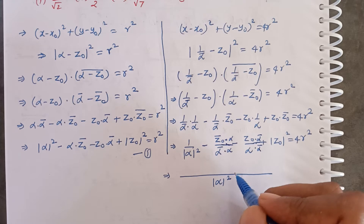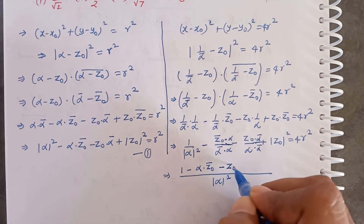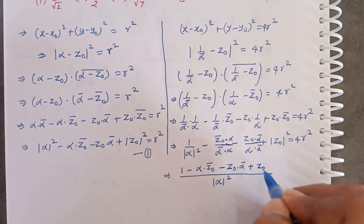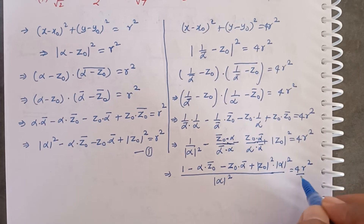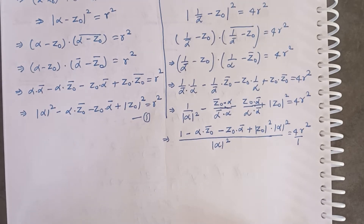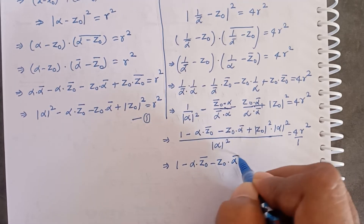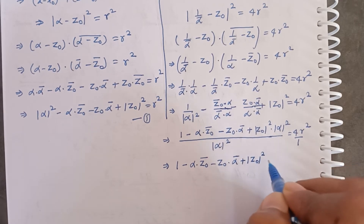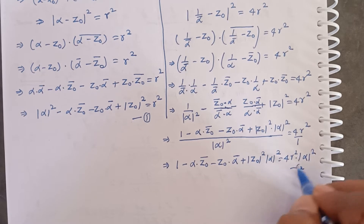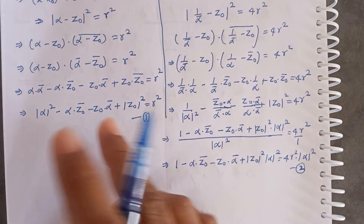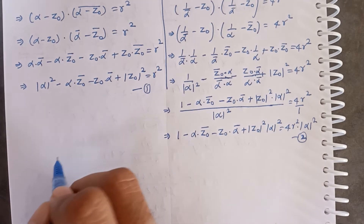Now we have equation one and equation two. We subtract equation two from equation one. Equation one: |α|² − α·z̄₀ − z₀·ᾱ + |z₀|² = r². Equation two: 1 − α·z̄₀ − z₀·ᾱ + |z₀|²·|α|² = 4r²·|α|². Subtracting equation two from equation one gives us a simplified expression.